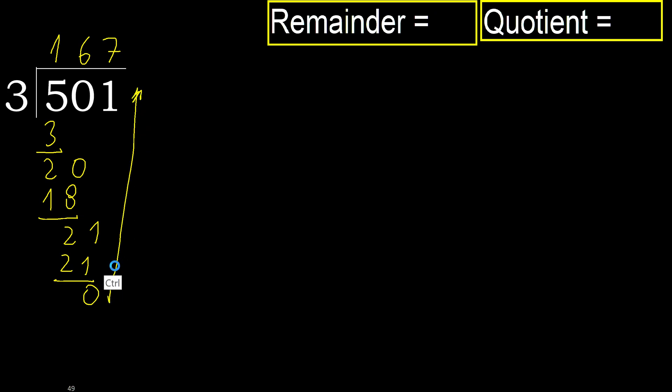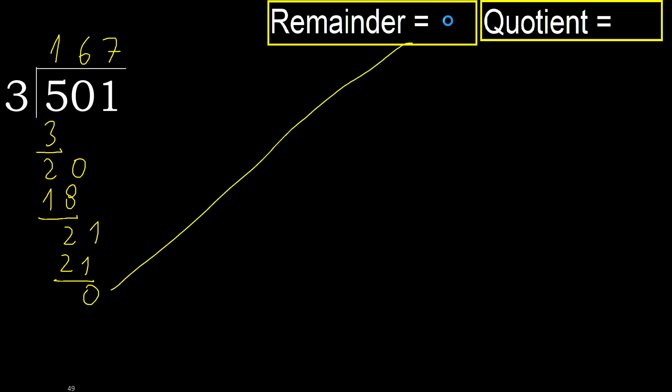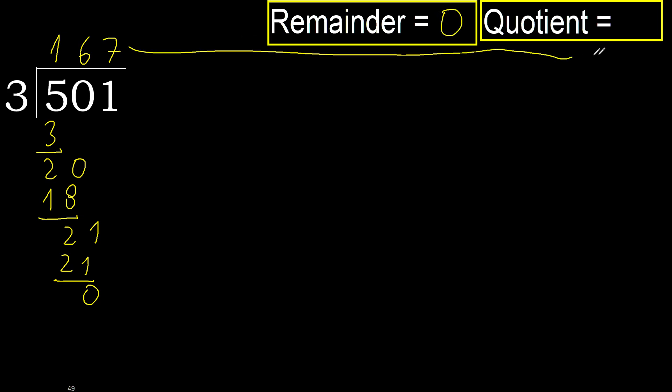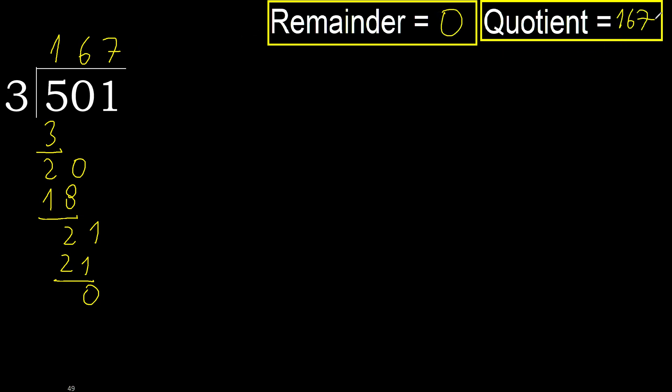That is not a number, therefore finish it. Ok. 501 divided by 3 is 167.